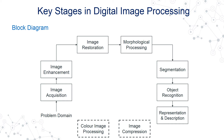Morphological image processing is required to extract the shape of image components, and is usually used for representation and description like boundaries, skeletons, and edges. Segmentation is related to partitioning the image into smaller and meaningful parts or regions so that we can extract features or regions from that.